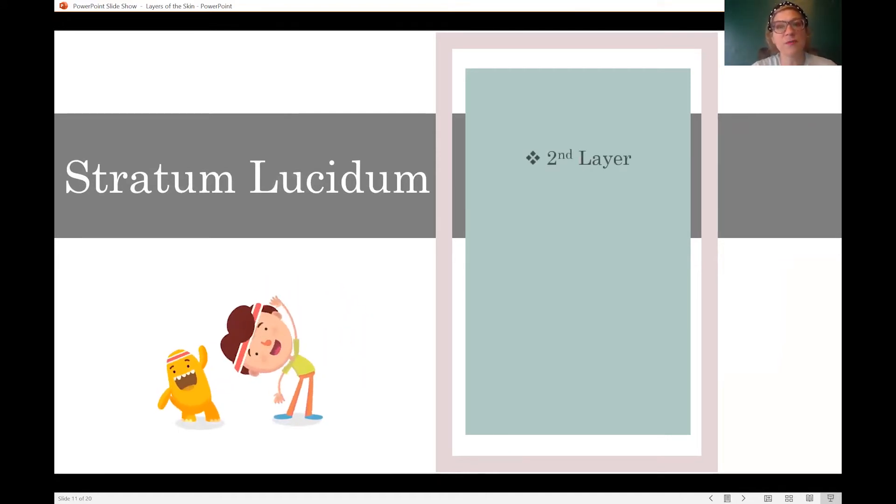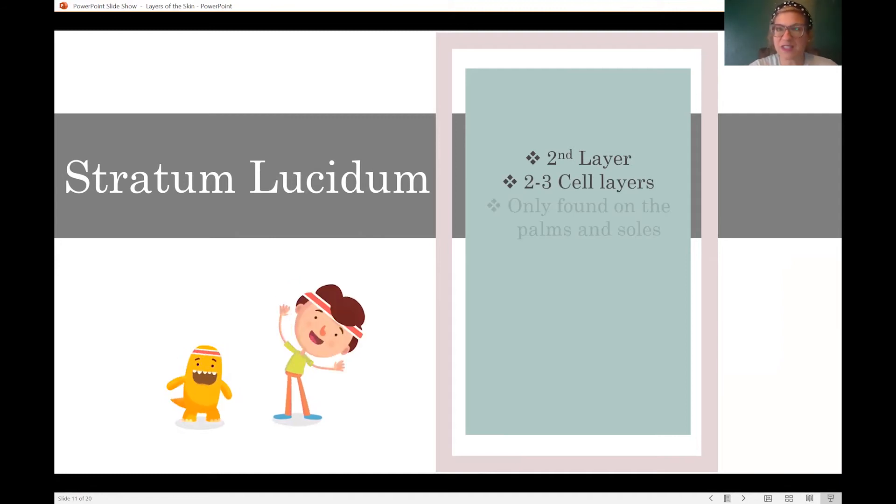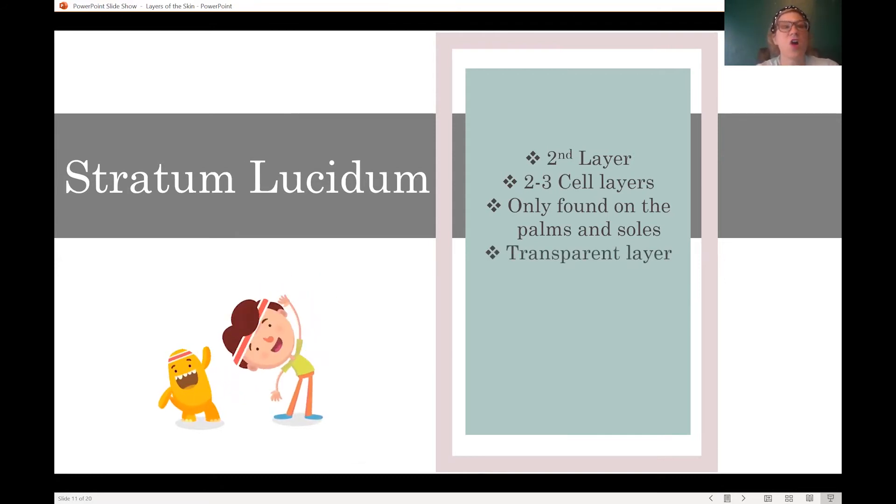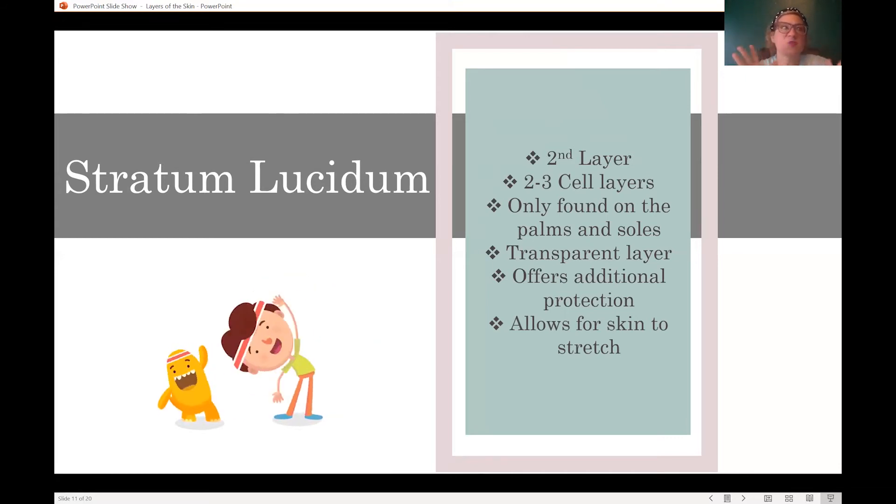The next layer is the stratum lucidum. So the stratum lucidum is the second layer. It's only two, three cell layers. So it's not nearly as thick and it's only actually found on the palms of our hands and the soles of our feet. So the stratum lucidum is not found everywhere on our body. It is considered a transparent layer because now all of those skin cells have become very, very see-through. They're very transparent. I remember this when I think of lucid or translucent. Translucent is when something is, we can see through it. Transparency, all of that is lucid. So stratum lucidum is translucent or transparent. It's a see-through layer. This offers additional protection and allows for the skin to stretch. Especially on our feet, on our hands, we need that extra stretch, that extra movement because this skin is really dealing with the most environmental concern, the most impact from outside things.